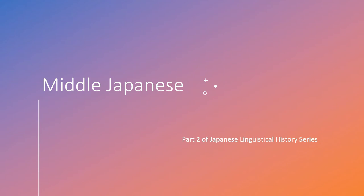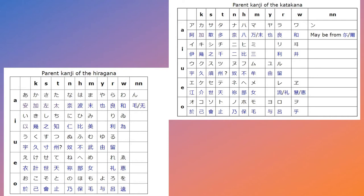From about the late Nara period to the early Heian period, a simplification of Manyogana occurred, and it ultimately resulted in the development of Hiragana and Katakana. All Hiragana and Katakana derived from a specific kanji and became phonograms for them. Hiragana derived from the cursive writings of Manyogana, while Katakana came from specific parts of Manyogana in certain scripts.